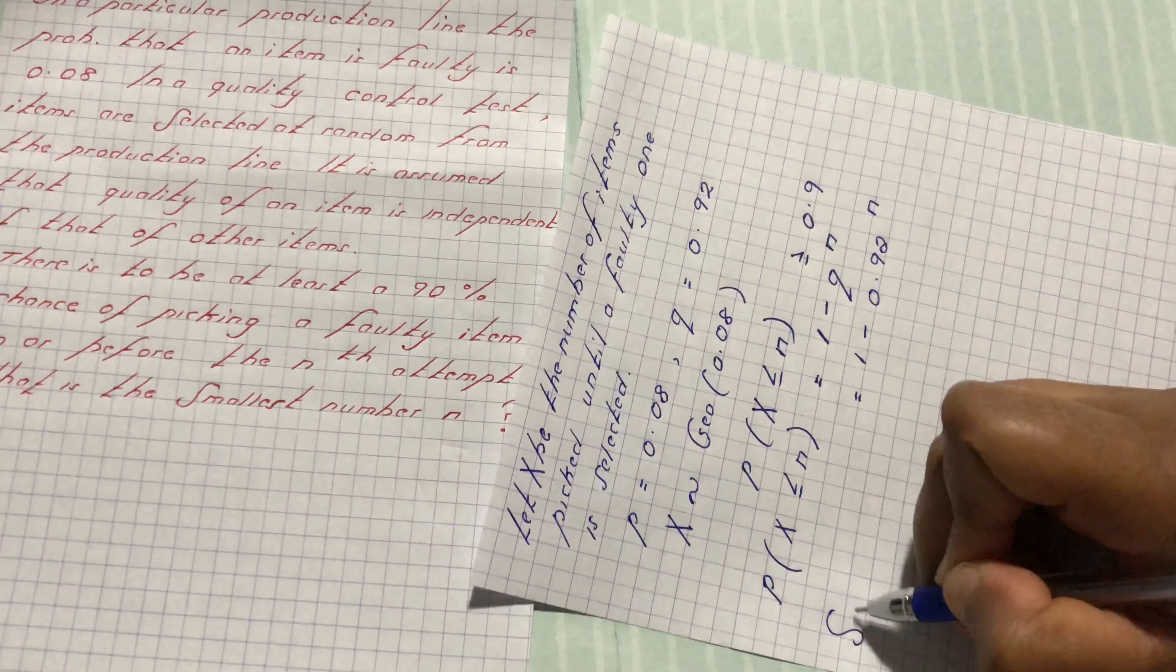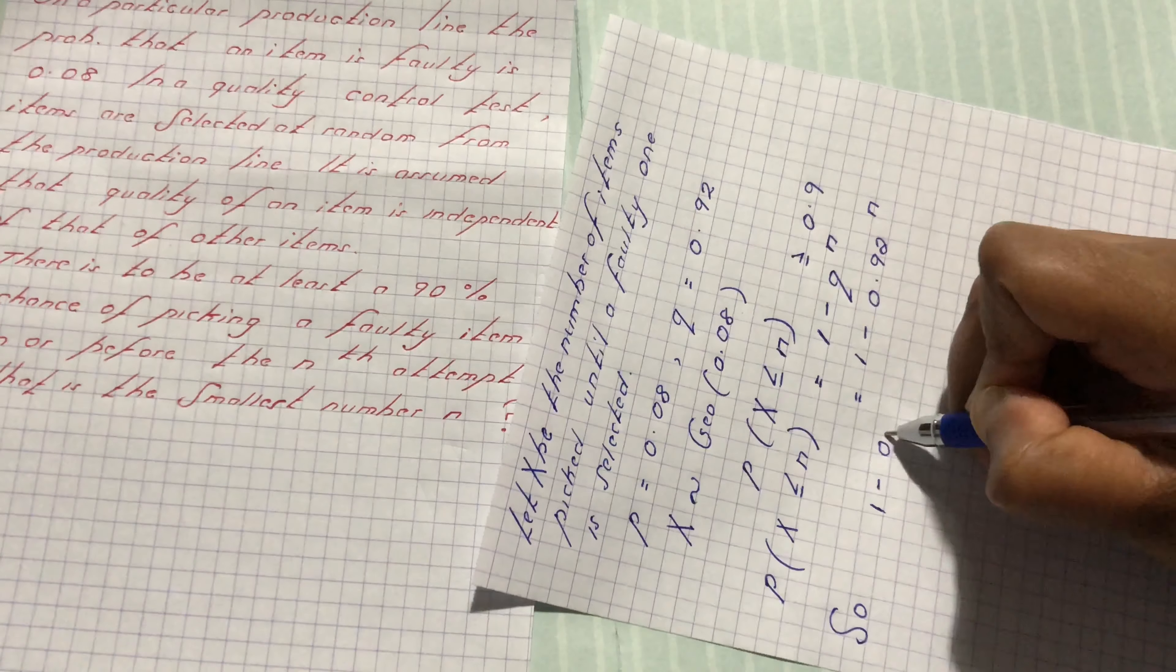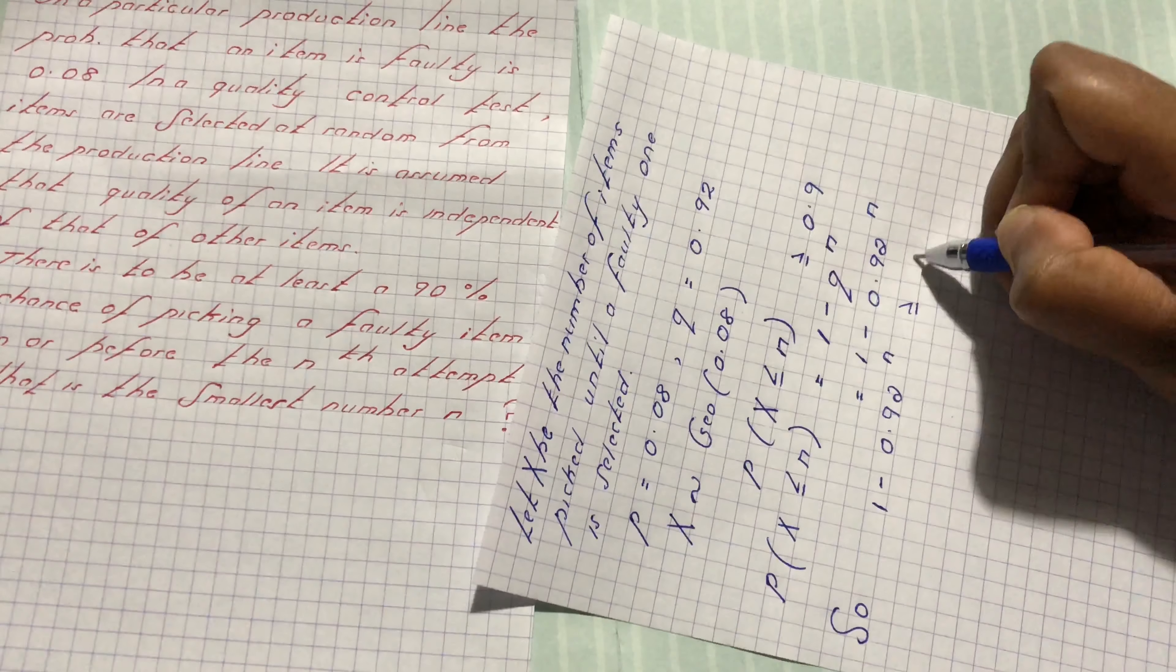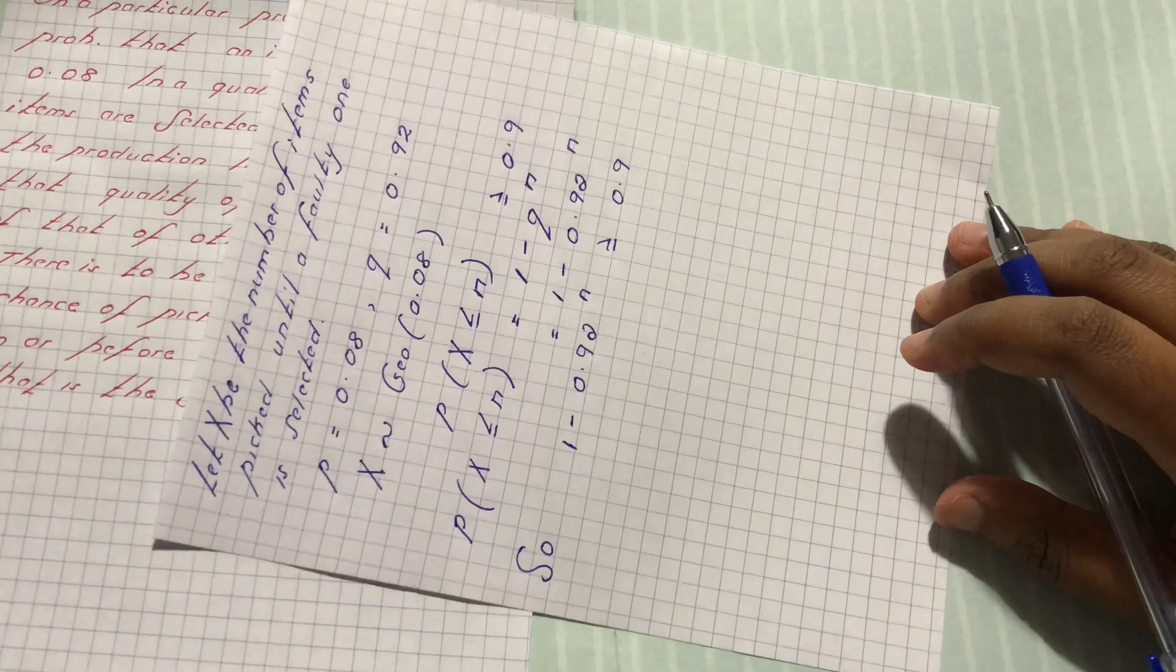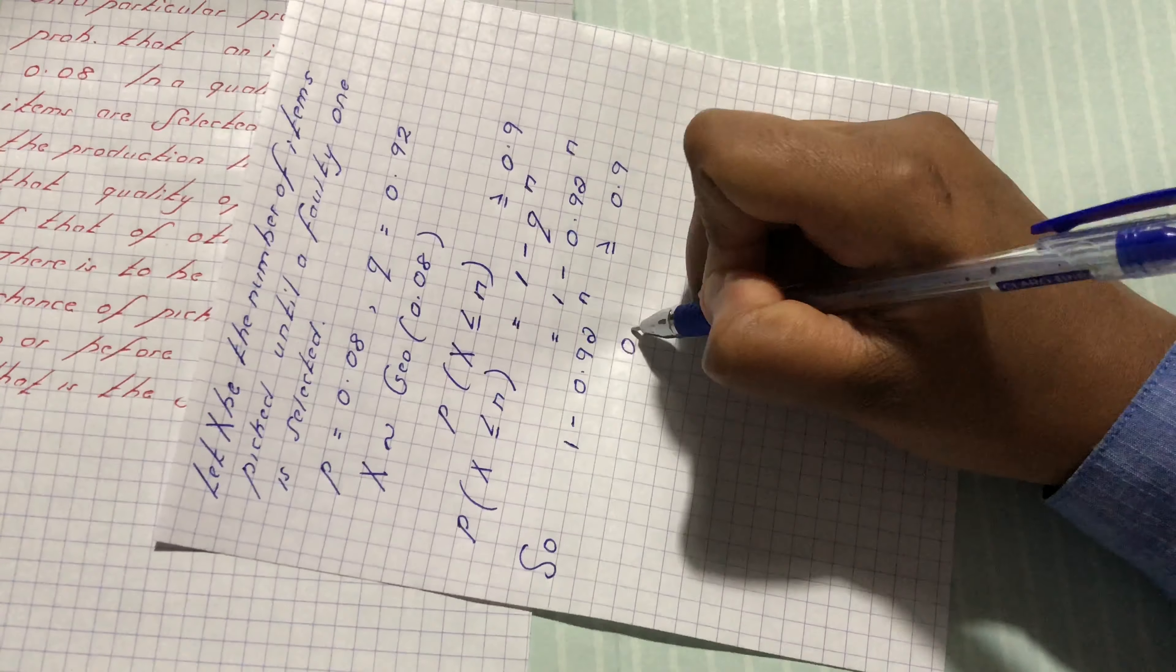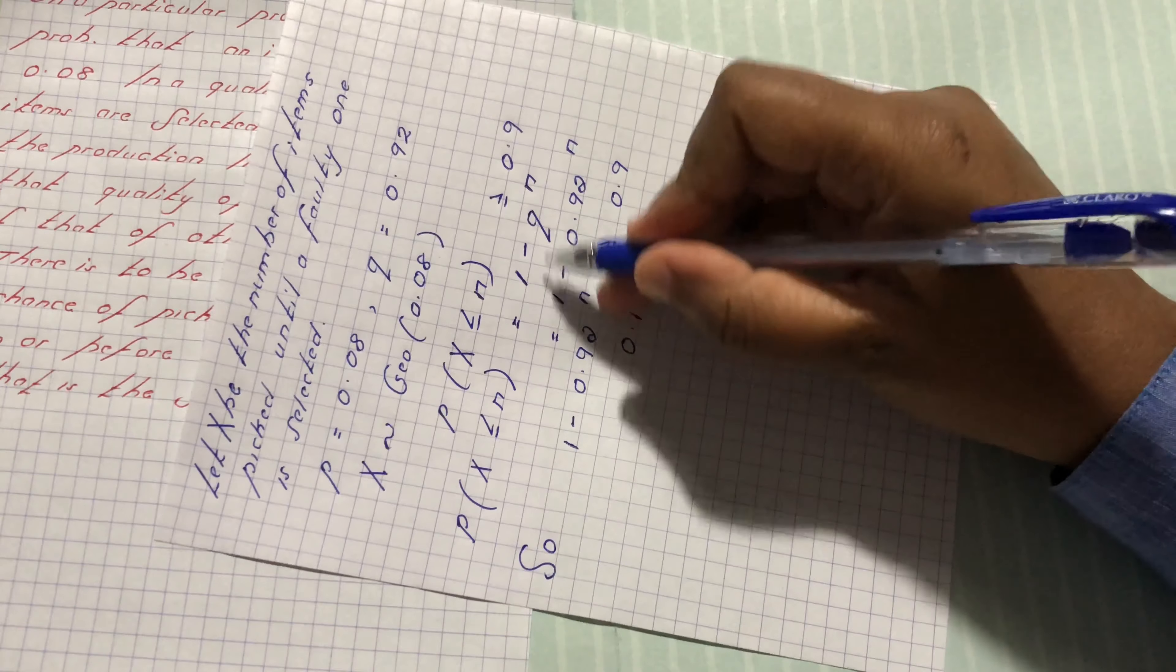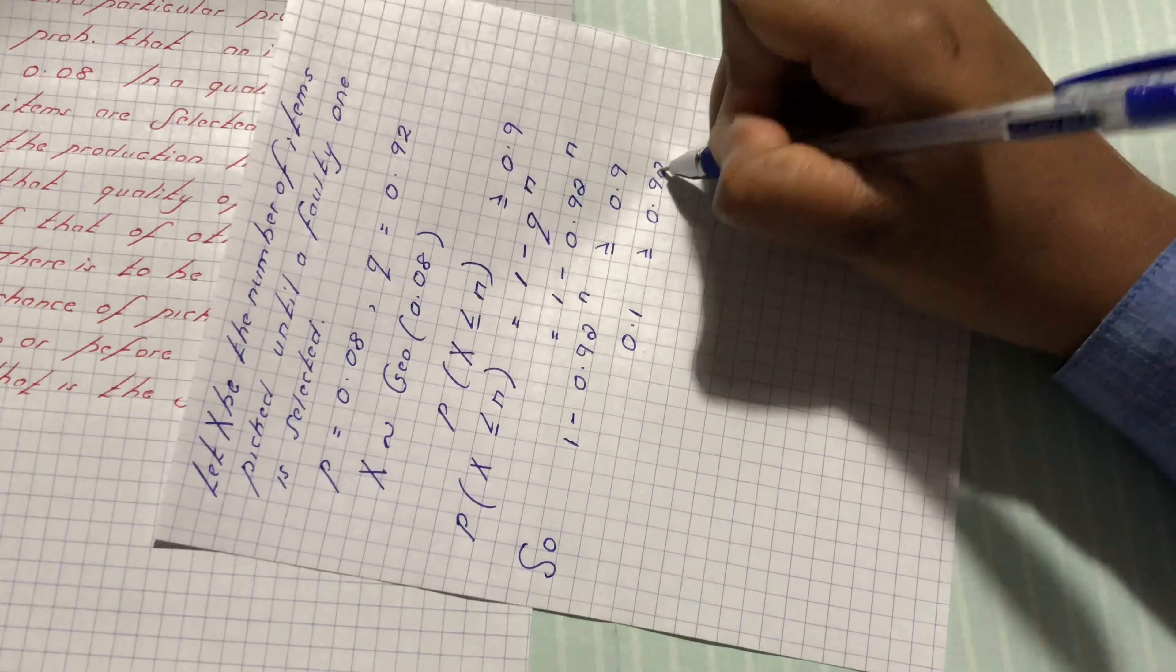So we have 1 minus 0.92 to the power n greater or equal to 0.9. So we are going to solve this inequality. We have, sending 0.9 to the left hand side, 0.1 greater or equal to, we send this to the right hand side, we have 0.92 power n.